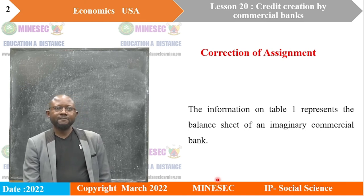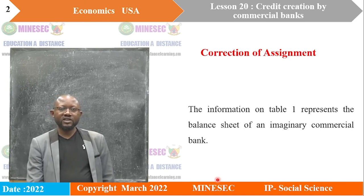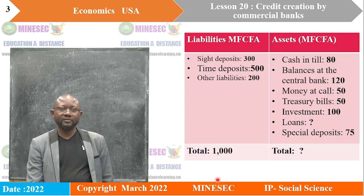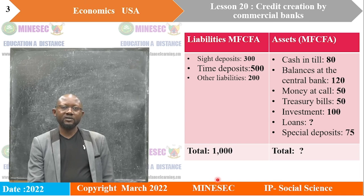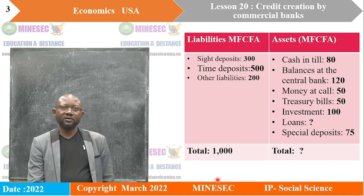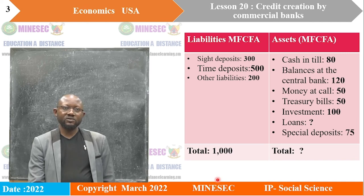This is the assignment. The information on Table 1 represents the balance sheet of an imaginary commercial bank. We have liabilities on the left in million francs CFA and assets on the right. For liabilities: sight deposit, time deposit, and other liabilities. Assets include: cash in the bank's coffers, balances at the central bank, money at call, treasury bills, investment, loans, and special deposits. Total for liabilities: 1,000. Total for assets: not given.